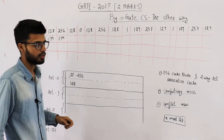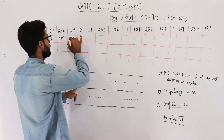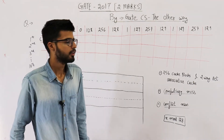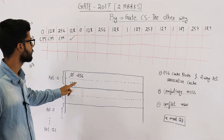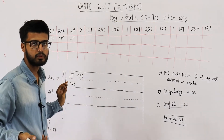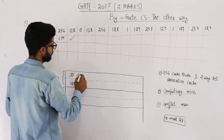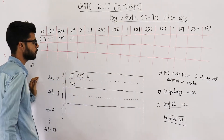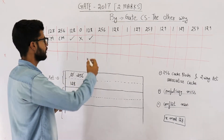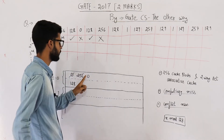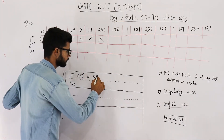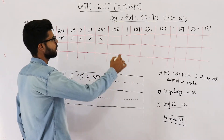Then 128 is accessed and found in cache — that's a hit. Next, block 0 is accessed again. One of the two blocks in set 0 must be replaced to accommodate block 0. The choice is between 256 and 128; since 128 was accessed more recently, 256 is the least recently used and gets replaced. Block 0 is placed there — this was a miss. Then 128 is accessed again and found in cache — hit. Then 256 is required; it's not in cache (cache has 0 and 128), so it's a miss. It's placed back in set 0. Then 128 is accessed again — hit.